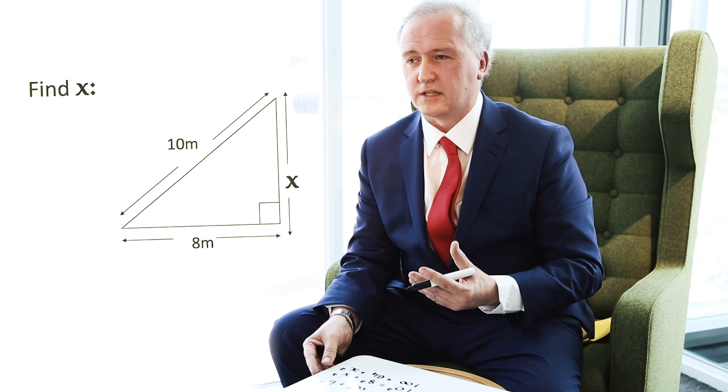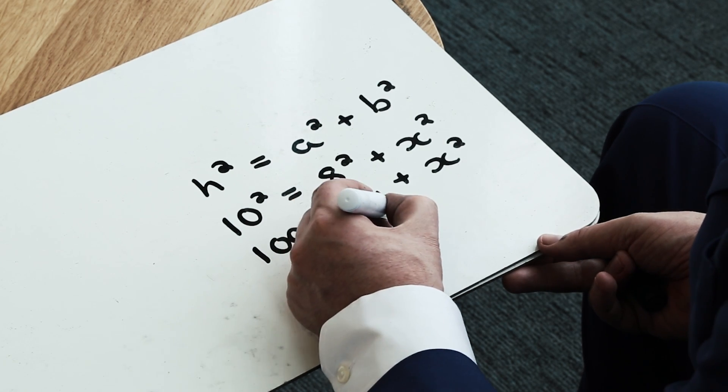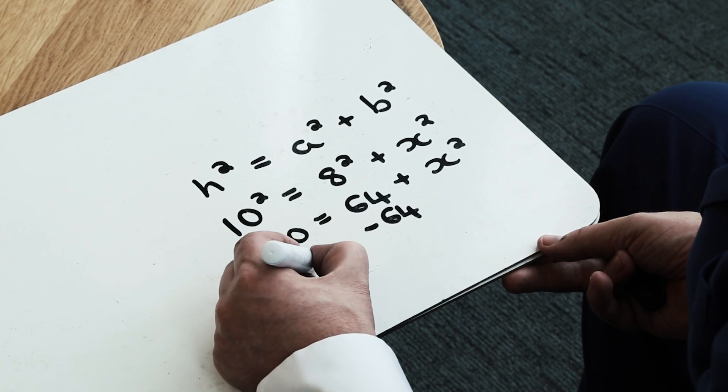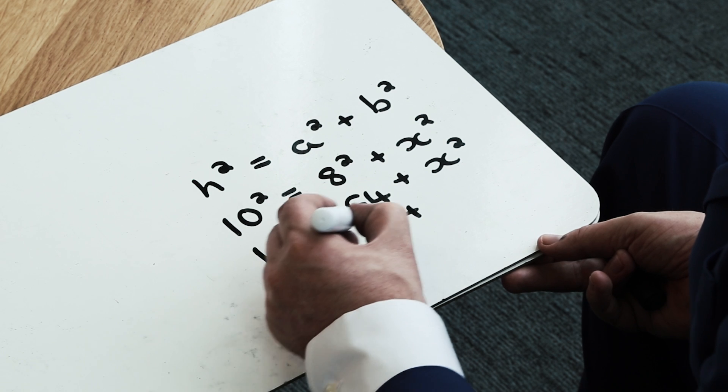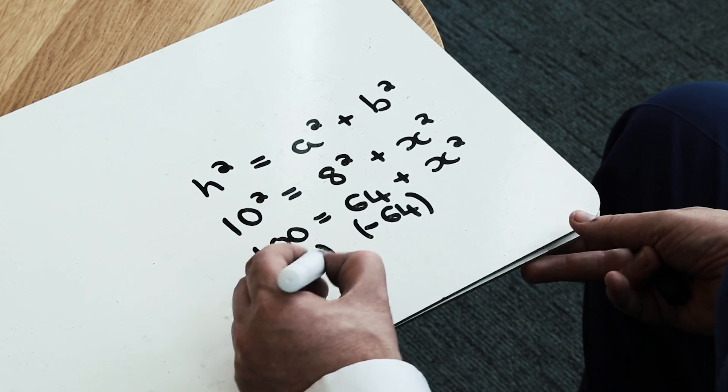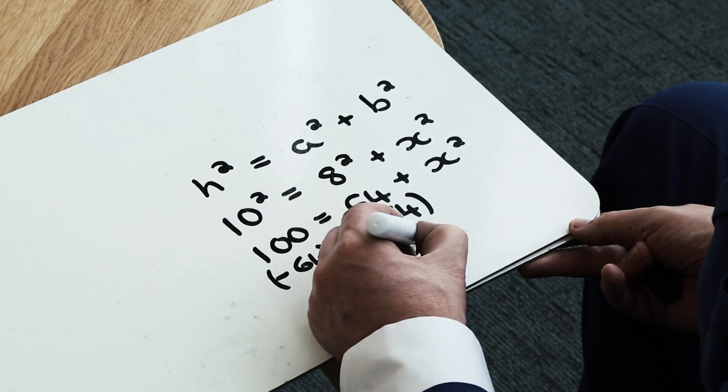Because my ultimate objective is to find the value of x to get x on its own, my next step is to take away 64 from each side of the equations. So I take 64 from the left-hand side, I take 64 from the right-hand side. And that gives me 36 is equal to x squared.